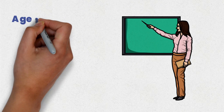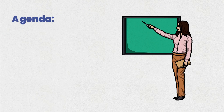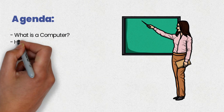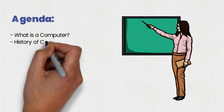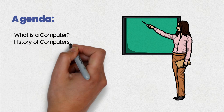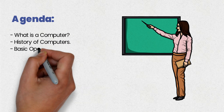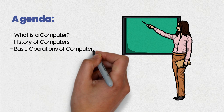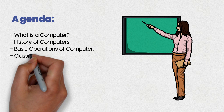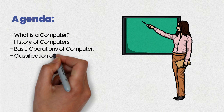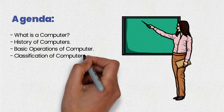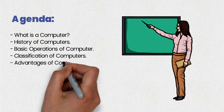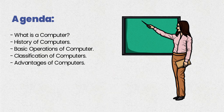First of all, we will discuss what is a computer and then we will elaborate the history of computers. After that, we will also discuss the basic operations of computer, classification of computers, and in the end, we will discuss advantages of computers.